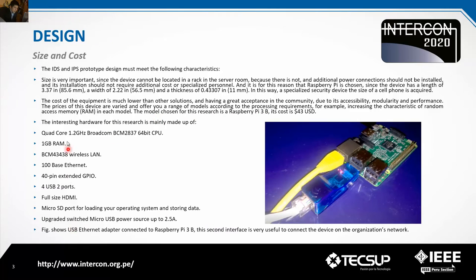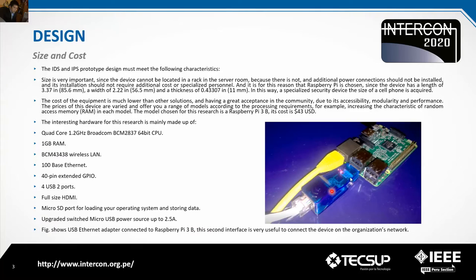The figure shows the CPU, RAM, wireless LAN, Ethernet interface, USB ports, extended GPIO, HDMI for display, and micro SD port. Another figure shows a USB Ethernet adapter connected to a Raspberry Pi 3B, so you can connect the adapter for an additional Ethernet interface.